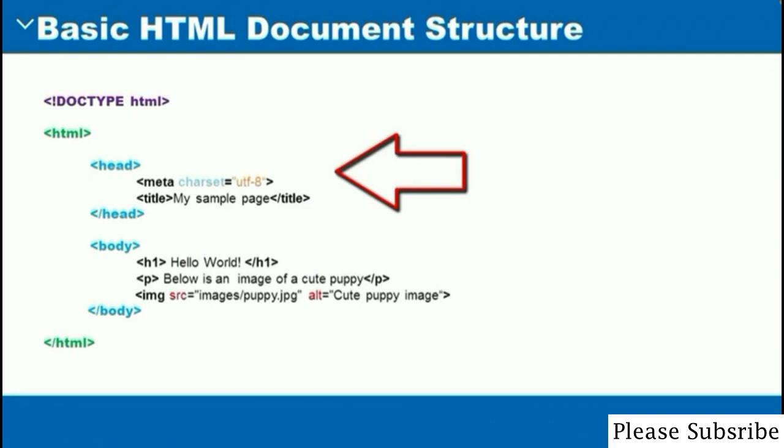What is a meta charset? The meta charset has a value of UTF-8, which is the attribute. This element is used to set the character set of your document. The standard is UTF-8, which includes most characters from the vast majority of human written languages.